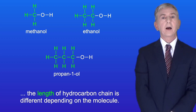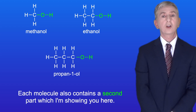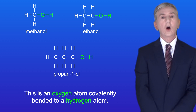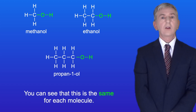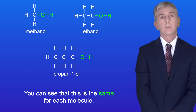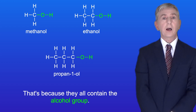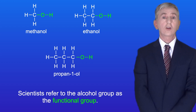As you can see, the length of the hydrocarbon chain is different depending on the molecule. Each molecule also contains a second part, which I'm showing you here. This is an oxygen atom covalently bonded to a hydrogen atom. Scientists refer to this as the alcohol group, and you can see that this is the same for each molecule. All of these molecules react in a similar way because they all contain the alcohol group.